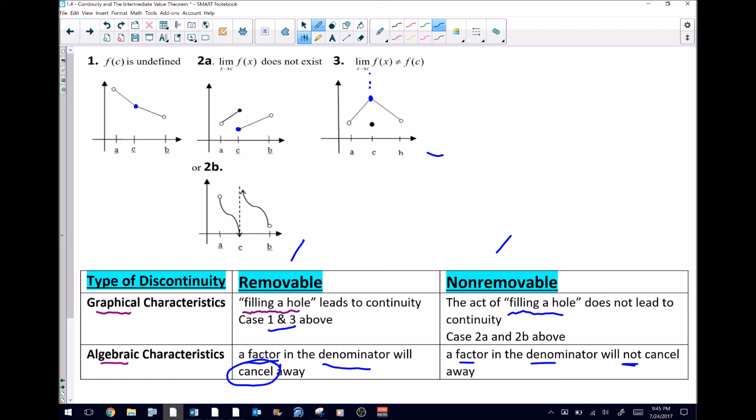Non-removable would be that factor in the denominator that will not cancel. I've got another video coming up where we're going to go into a little bit more detail about these algebraic characteristics. Anyway, I hope that helps and we will see you next time.